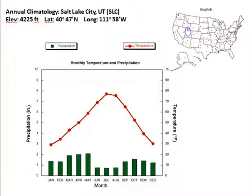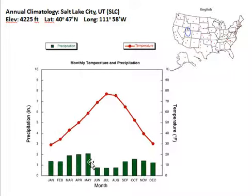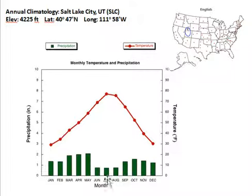What this shows you is the precipitation in bars — so you can see how many inches of rainfall over the year. And then you see the day and night average of temperature over the year. One of the things you can see is that most of the rainfall in Salt Lake comes in the spring — March, April, May. In the summer months, June, July, August — that's the Northern Hemisphere summer — you have the least amount of rainfall and the highest temperatures.